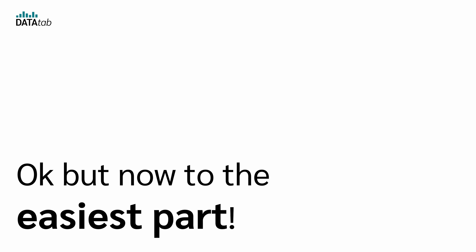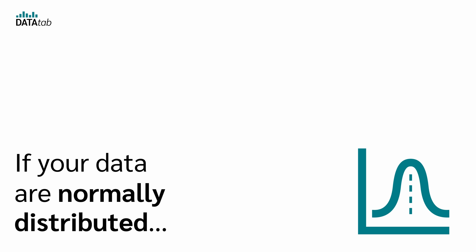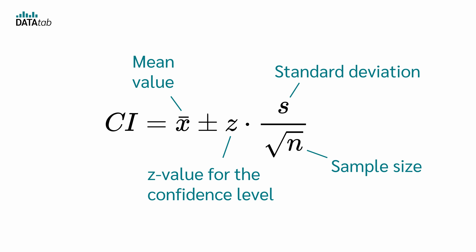Okay, but now to the easiest part. How is the confidence interval for the mean calculated? If your data are normally distributed, the confidence interval for the mean can be calculated with this formula: The confidence interval CI is x̄ ± z · s/√n. Here x̄ is the mean, z is the z-value for the respective confidence level, n is the sample size, and s is the standard deviation.